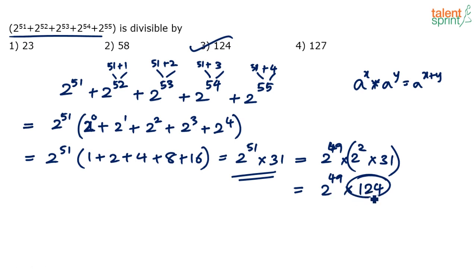124 and 124 gets cancelled and we'll be left with 2 power 49. So option 3, 124 is the final answer.